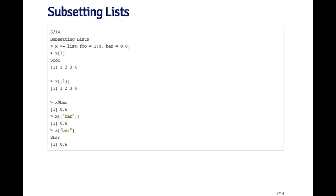If I use the single bracket with the name — x bracket quote bar — that gives me a list with the element bar in it. Remember, the single bracket always returns a list when subsetting a list. The nice thing about subsetting by name is that you don't have to remember where it is in the list. I can just use its name and it will automatically extract that element from the list.